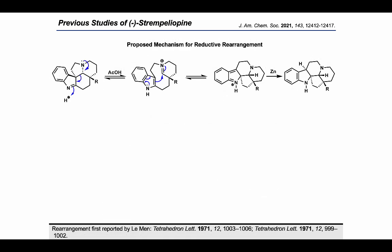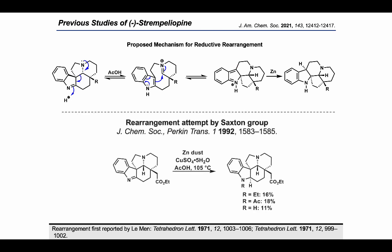The mechanism of this rearrangement, first proposed by Lemon and co-workers, occurs first by a Grob-type fragmentation of the indolenium in acetic acid to form an iminium species that then alkylates on the C2 position of the indole to generate an aza-benzphobium intermediate, which is then reduced selectively in the equilibrium mixture at this position by zinc to give the desired schizozygene scaffold.